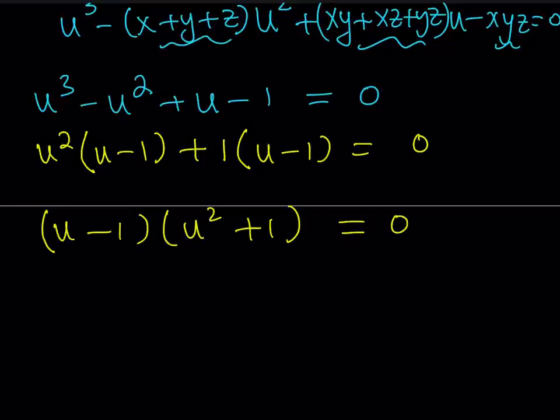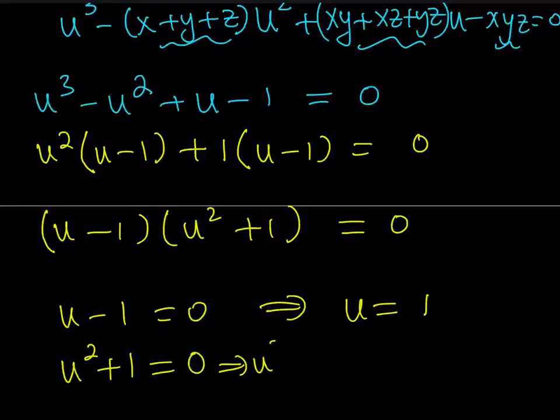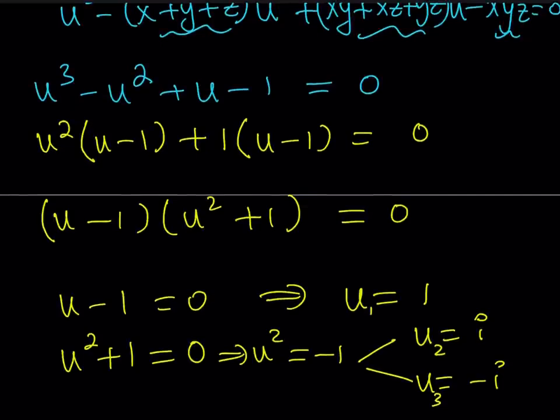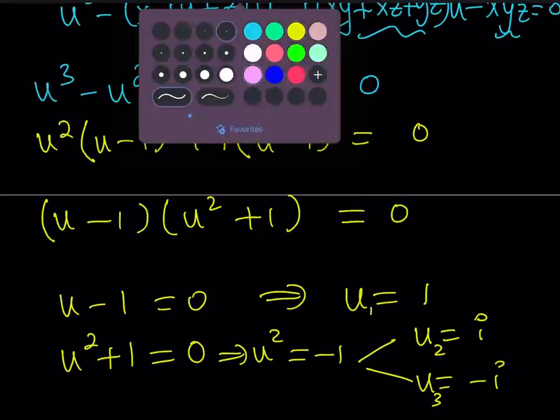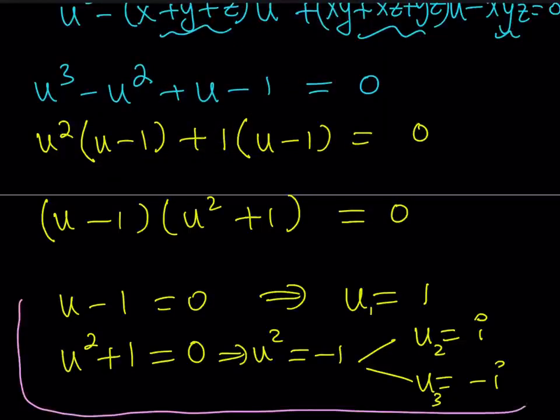Now, I was able to factor my cubic so I can solve it. Set each factor equal to 0 by zero product property. I get U minus 1 equals 0. From here, I get U equals 1. From the second factor, I get U squared plus 1 equals 0, which means U squared equals negative 1, which means that we have two solutions because no real number squared can be negative 1. But this is not true for complex numbers. So we have the solutions, I and negative I. If you want to call these U1, U2, and U3, you can do that too. And these are going to be all the solutions to our complex system.